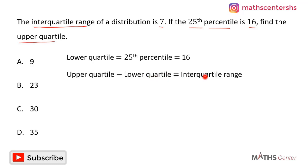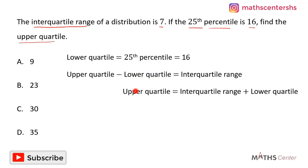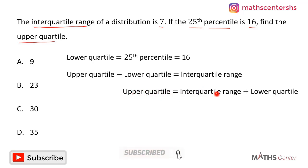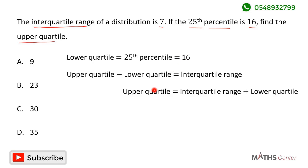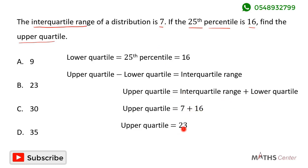The interquartile range equals the upper quartile minus the lower quartile. Making the upper quartile the subject gives: upper quartile equals interquartile range plus lower quartile. The interquartile range is 7 and the lower quartile is 16, so the upper quartile equals 7 plus 16, which gives us 23.